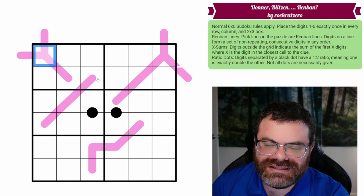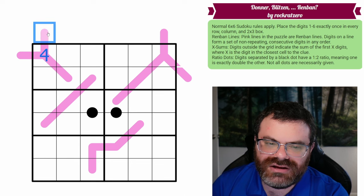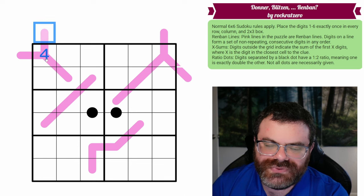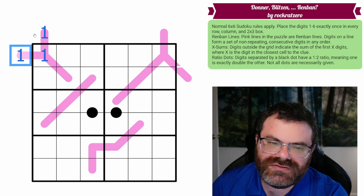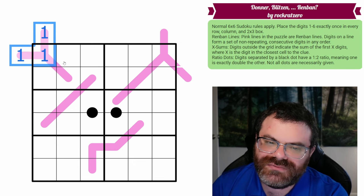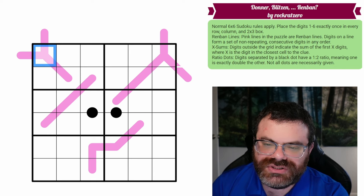So in fact, this can't even be 4. If this was 4, that would add to 10, but we wouldn't be able to put a 10 on the same Renband as a 4. So we also can't put a 1, because these would both have to be 1 clues, and we'd have three 1s on the same Renband. So this is only 2 or 3.